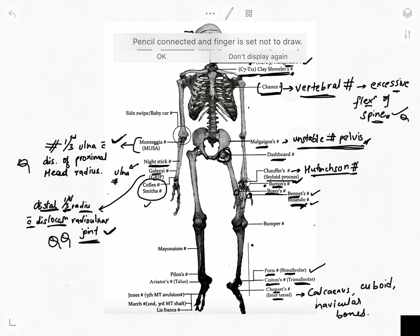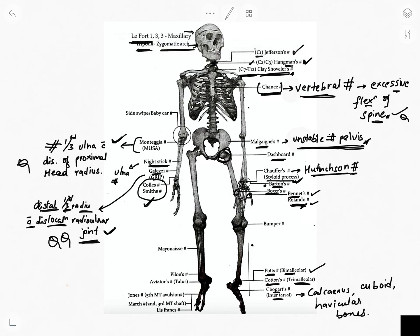Colles' fracture is a fracture of the distal forearm in which the broken end of the radius is bent backwards — it is a very common extra-articular fracture. Smith's fracture is also a fracture of the distal radius, caused by a direct blow to the dorsal forearm or falling onto a flexed wrist. The key difference: Smith's fracture results from a flexed wrist, Colles' from an extended wrist.